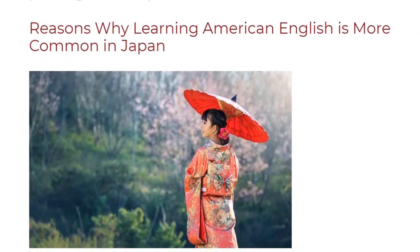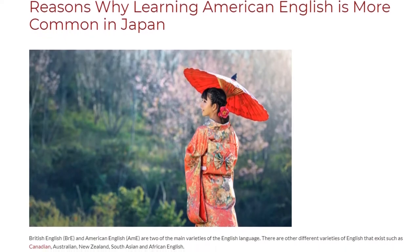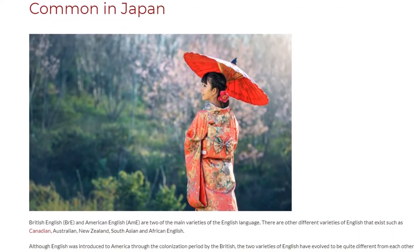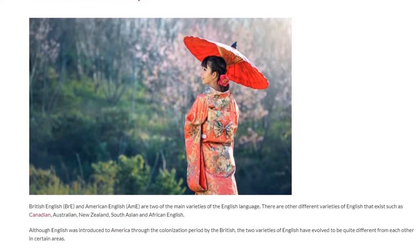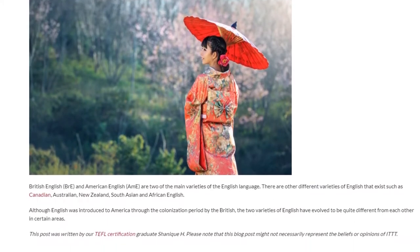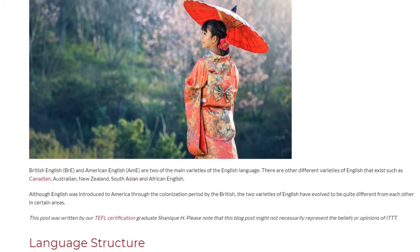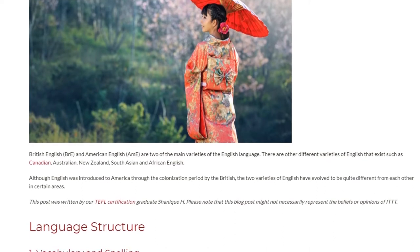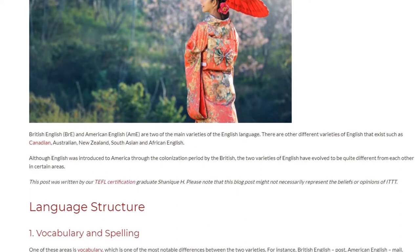Reasons Why Learning American English is More Common in Japan. British English and American English are two of the main varieties of the English language. There are other different varieties of English that exist, such as Canadian, Australian, New Zealand, South Asian, and African English. Although English was introduced to America through the colonization period by the British, the two varieties of English have evolved to be quite different from each other in certain areas.